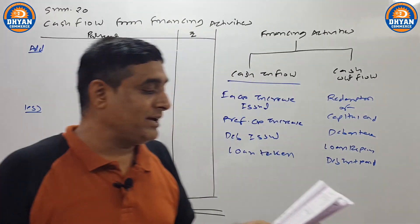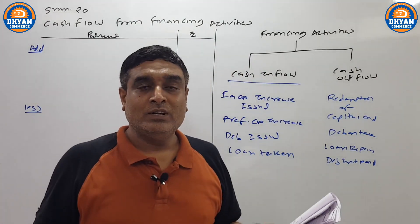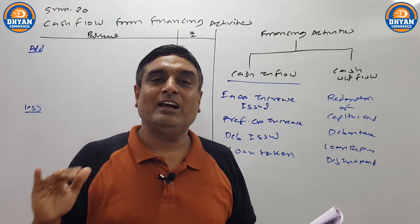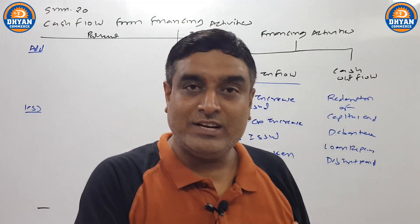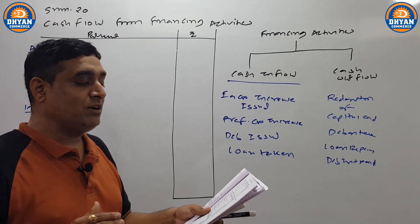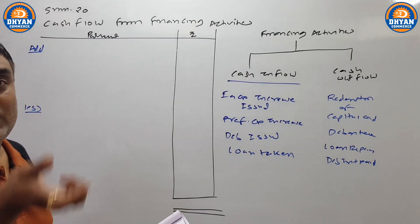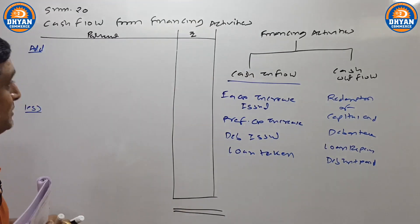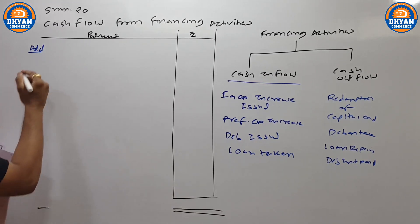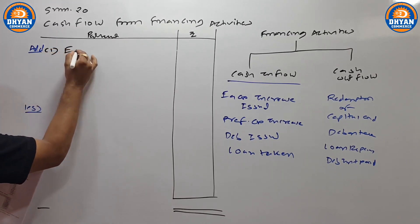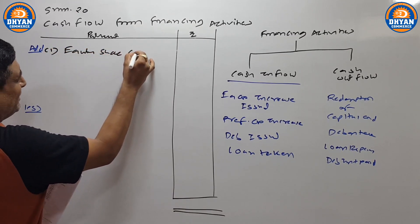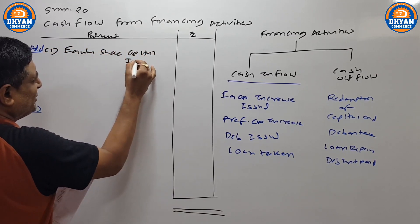Sabse pehla point hai — purchase of land. Iska upyog hame financing activity mein nahi karna hai. Land kharidna investing activity hai, to dhyan mein nahi lena. Uske baad hai — equity share issued. Agar aap equity share issue karo public mein, aapko paise receive honge — that is called financing activities. To aapko dhyan mein likhna hoga: equity share capital issued.